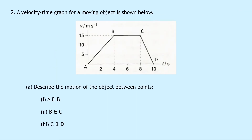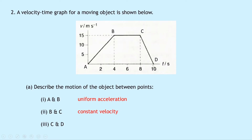Question 2 says that a velocity time graph for a moving object is shown below. We have velocity in metres per second and time in seconds, with an object travelling from A to B to C to D. Part A says to describe the motion at each stage. From A to B that is a uniform acceleration because we have a positively sloping line. From B to C we have a straight horizontal line which means a constant velocity. From C to D we have a uniform deceleration because it's a negatively sloping line.